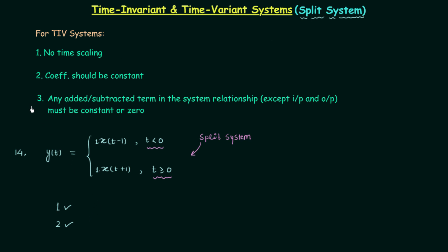For condition 3: any added or subtracted term in the system relationship, other than input and output, must be constant or zero. Here there are no such added or subtracted terms, so condition 3 is also satisfied. Since all three conditions are satisfied, it appears the system is time invariant.